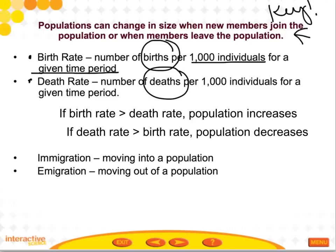Population can also change by moving into or out of a population. There's immigration — moving into a population — and emigration — moving out of a population. We'll use the terms immigration and emigration to tell the difference between the two.